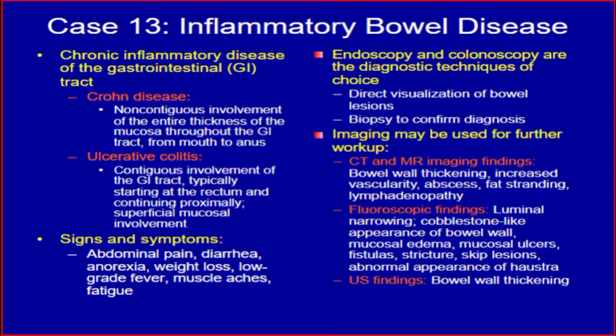Imaging may be used for further workup. CT and MRI imaging findings include bowel wall thickening, increased vascularity, abscess, fat stranding, and lymphadenopathy. Fluoroscopic findings include luminal narrowing, cobblestone-like appearance of the bowel wall, mucosal edema, mucosal ulcers, fistulas, strictures, skip lesions, and abnormal appearance of haustra.